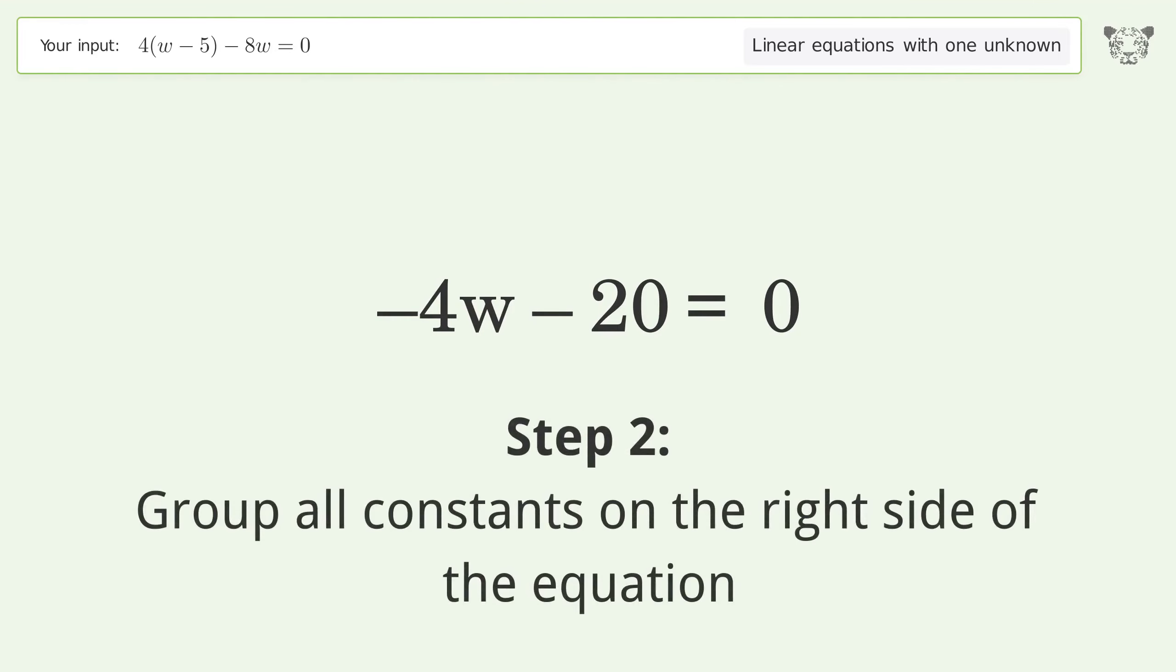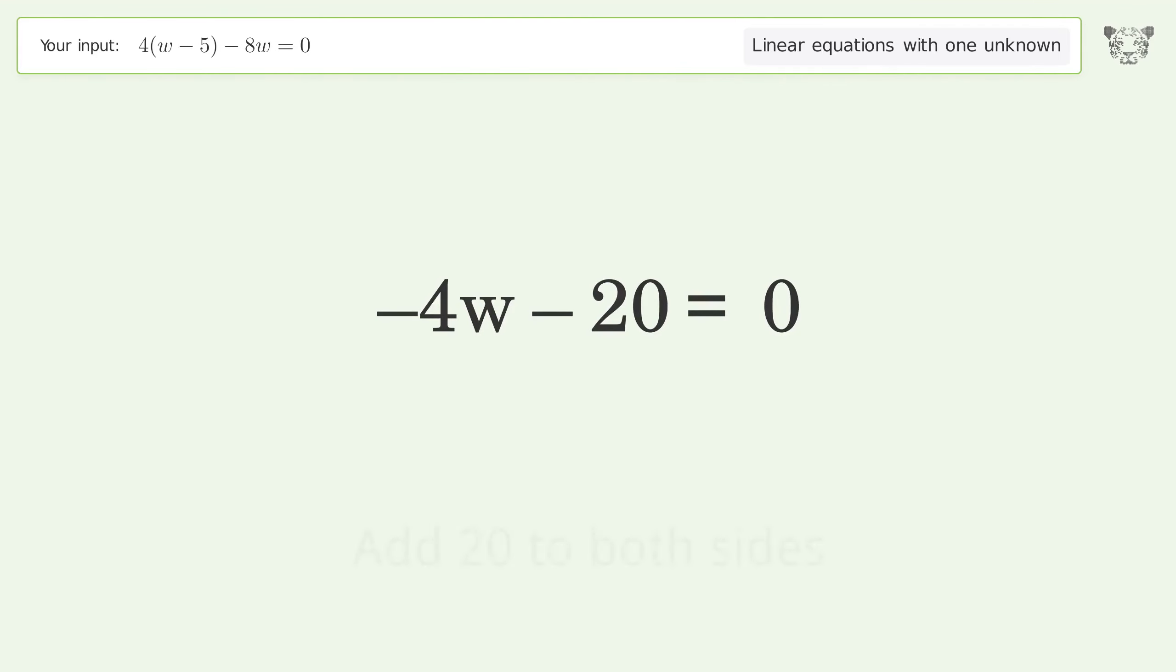Group all constants on the right side of the equation. Add 20 to both sides. Simplify the arithmetic.